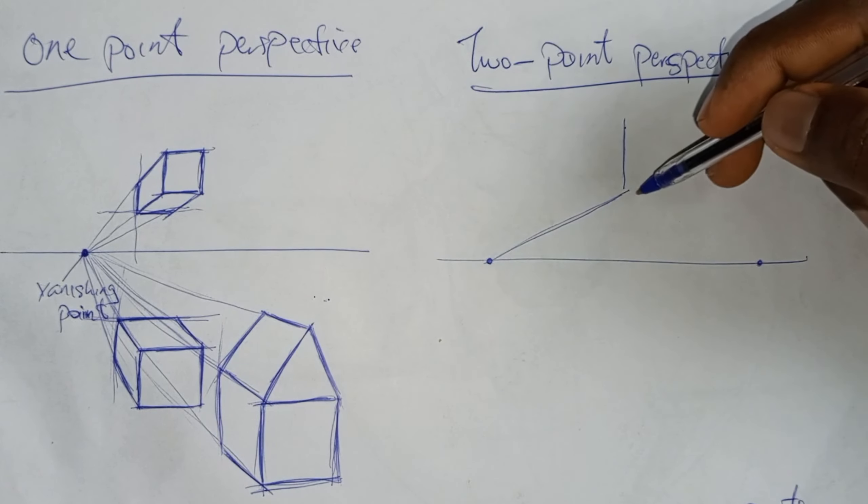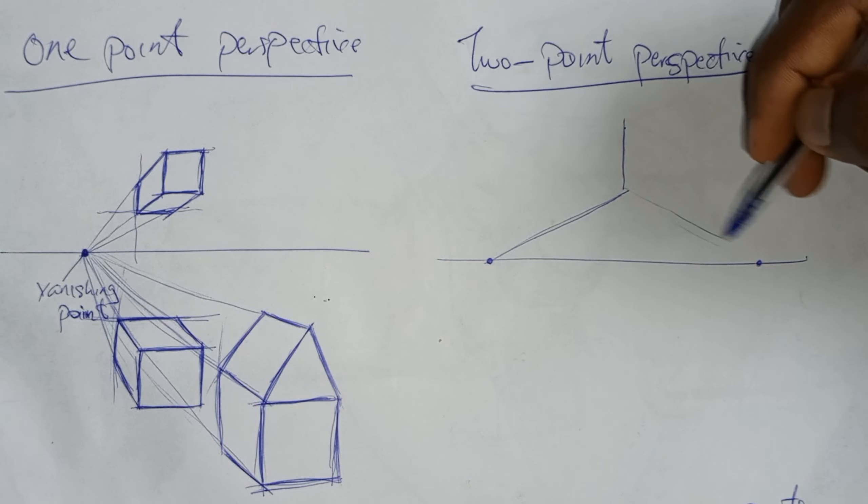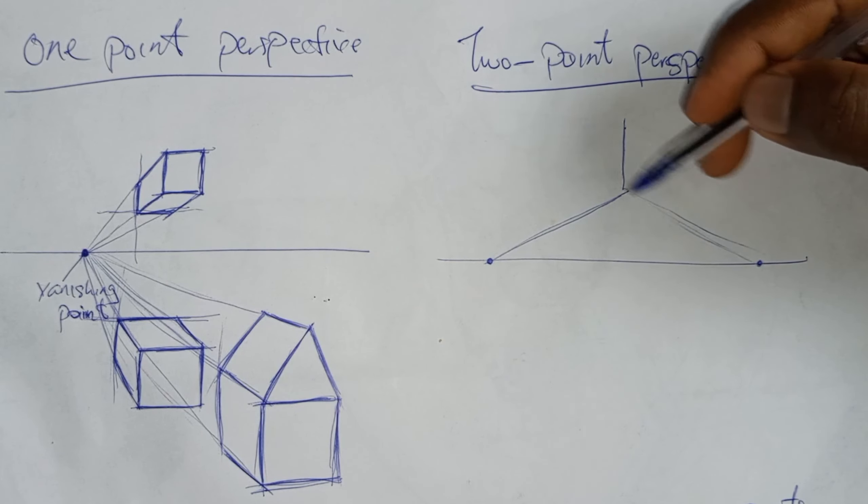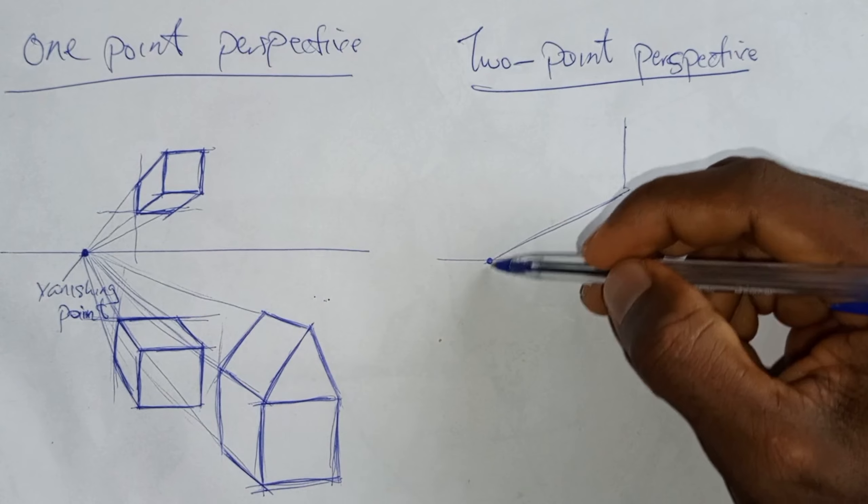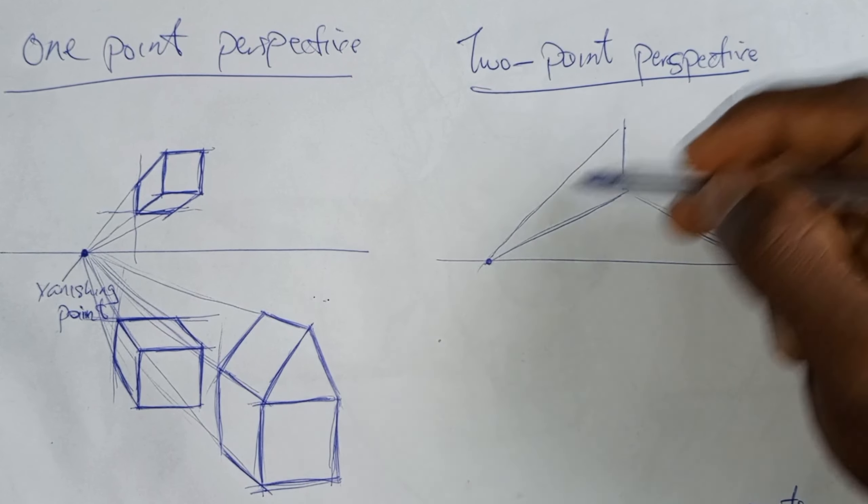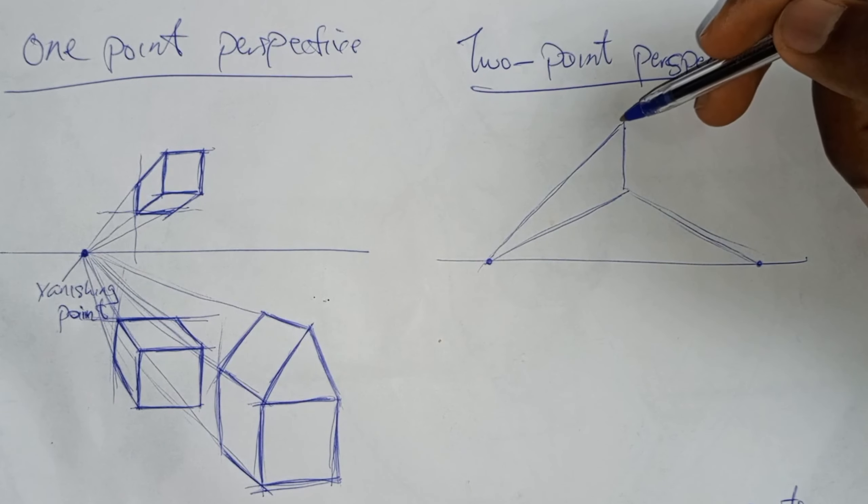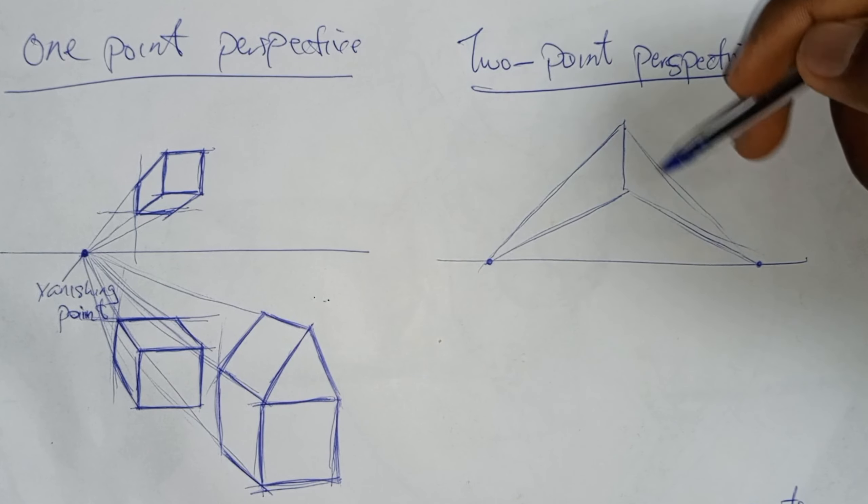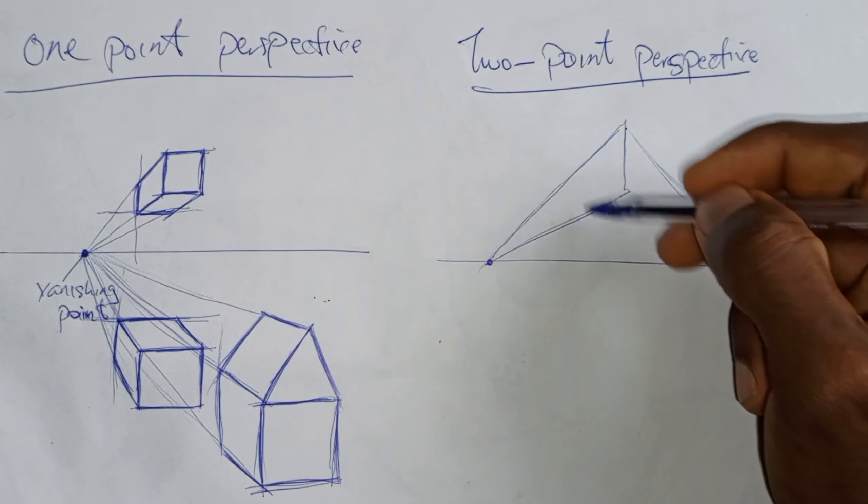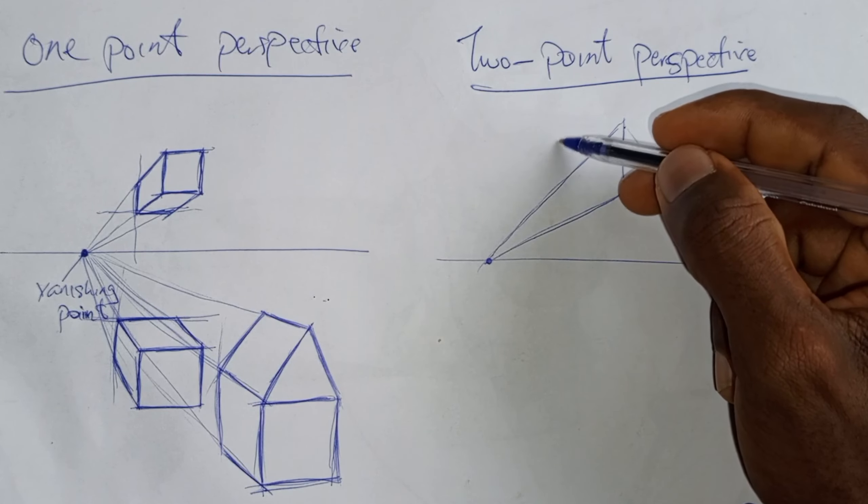So following the explanation I just gave, I want to make a practical example of what I meant by creating a sense of space. Now I'm going to use a cube for this example to see how to achieve a sense of space using your two-point perspective.